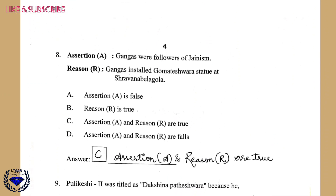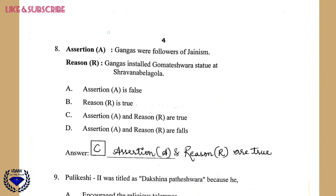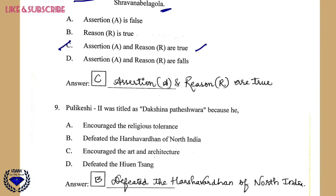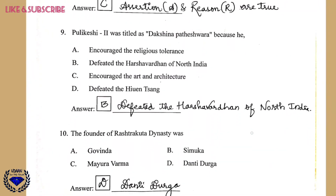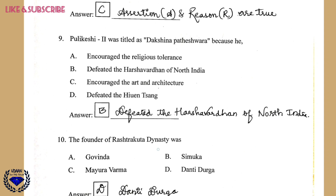Question 8 is an assertion and reason question. The assertion is: Gangas were followers of Jainism — this is correct, because the Gangas followed Jainism. The reason is: Gangas installed the Gomteshwara statue at Shravana Belagula — this is also correct. So the correct answer is C: both Assertion A and Reason R are true. Question 9: Pulkhesi II was entitled Dakshinapatheshwara because he defeated Harshavardhana of North India — that is option B.